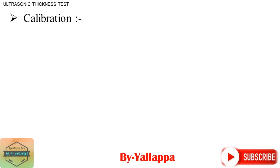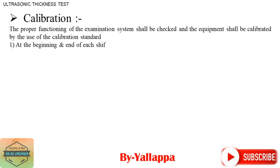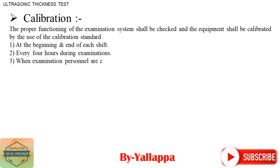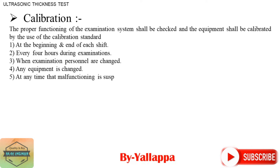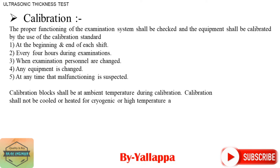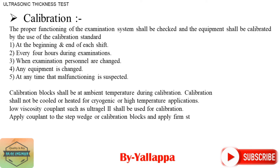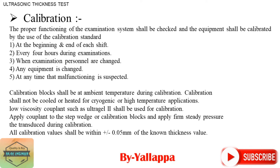Calibration: The proper functioning of the examination system shall be checked and equipment calibrated using the calibration standard: 1. At the beginning and end of each shift. 2. Every 4 hours during examinations. 3. When examination personnel are changed. 4. When any equipment is changed. 5. At any time that malfunctioning is suspected. Calibration blocks shall be at ambient temperature during calibration, and shall not be cooled or heated for cryogenic or high temperature applications. Use low viscosity couplant such as Ultragel 2 for calibration. Apply couplant to the step wedge or calibration blocks and apply firm steady pressure to the transducer during calibration. All calibration values shall be within 0.05 mm of the known thickness value.